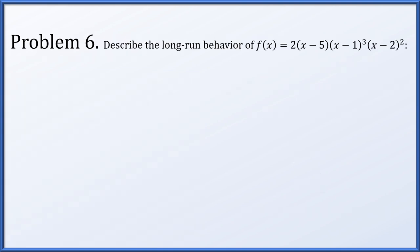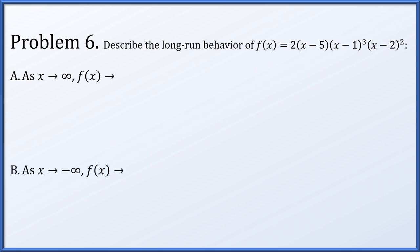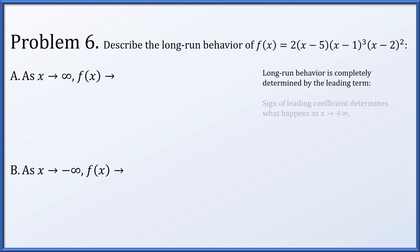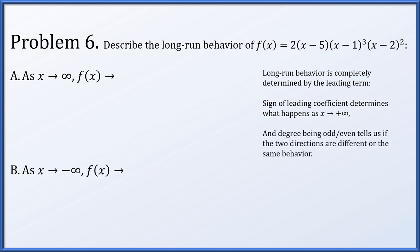Problem 6: describe the long-run behavior of f(x) = 2(x − 5)(x − 1)³(x − 2)². Long-run behavior for a polynomial is completely determined by the leading term. Whether the leading coefficient is positive or negative determines what happens as x → +∞, and whether the degree is odd or even tells you whether the two end behaviors are the same or different. We just need the leading term, not the full expansion.